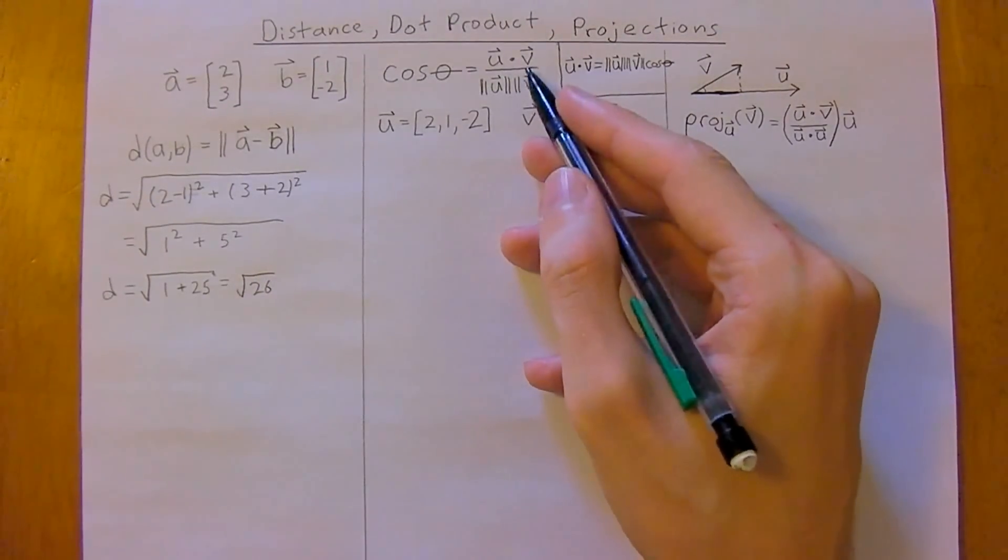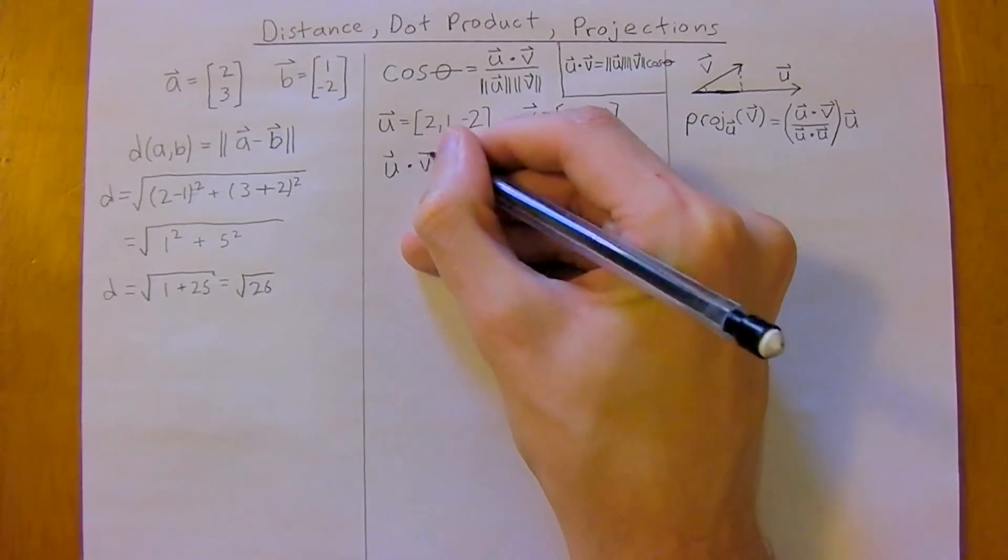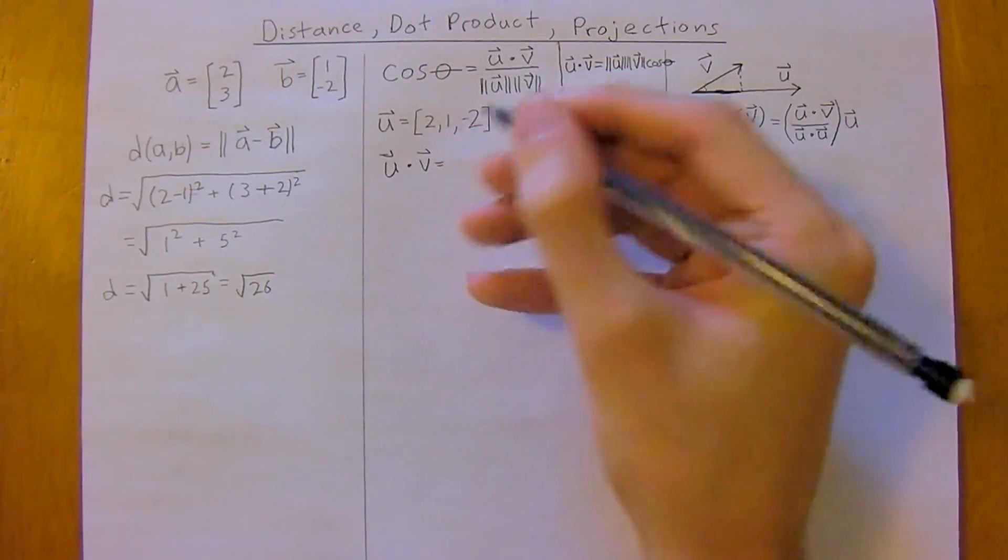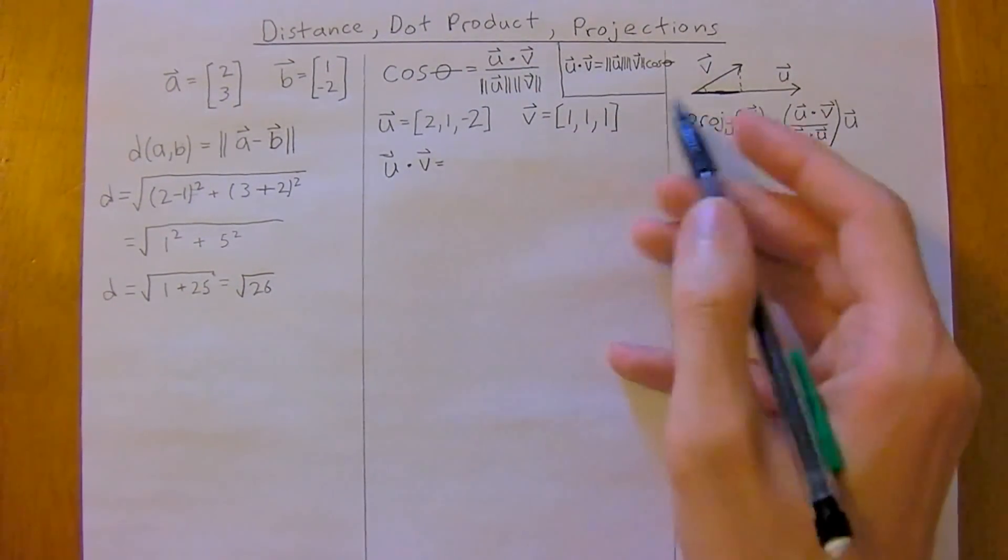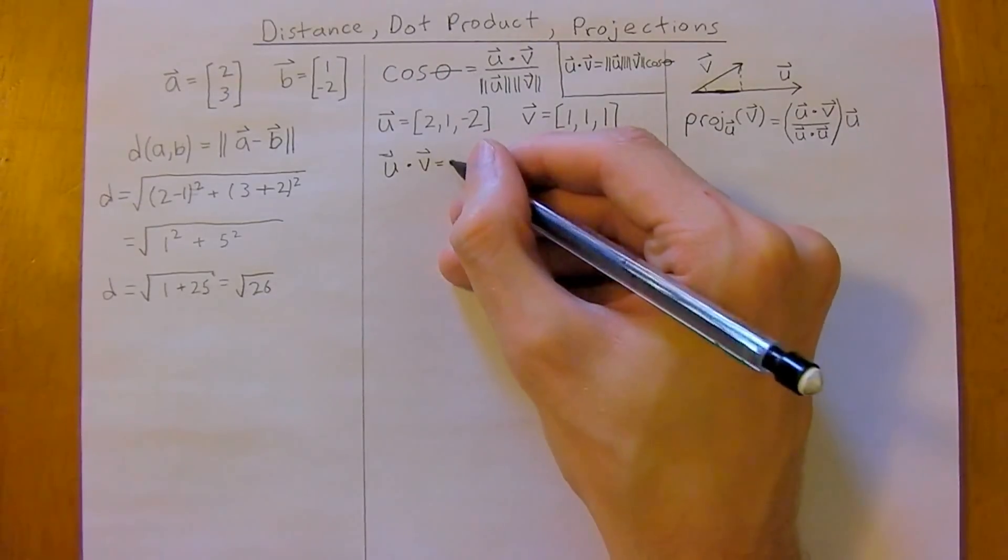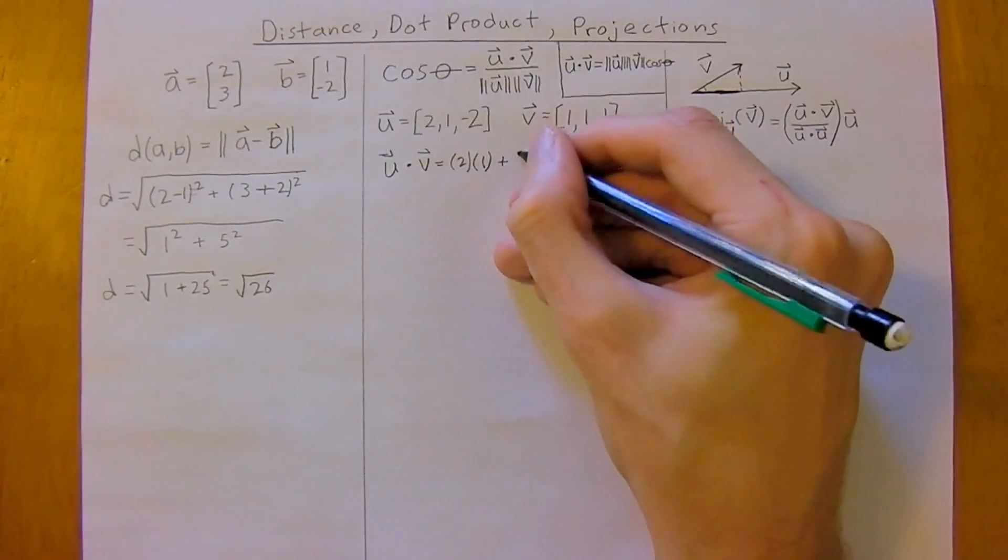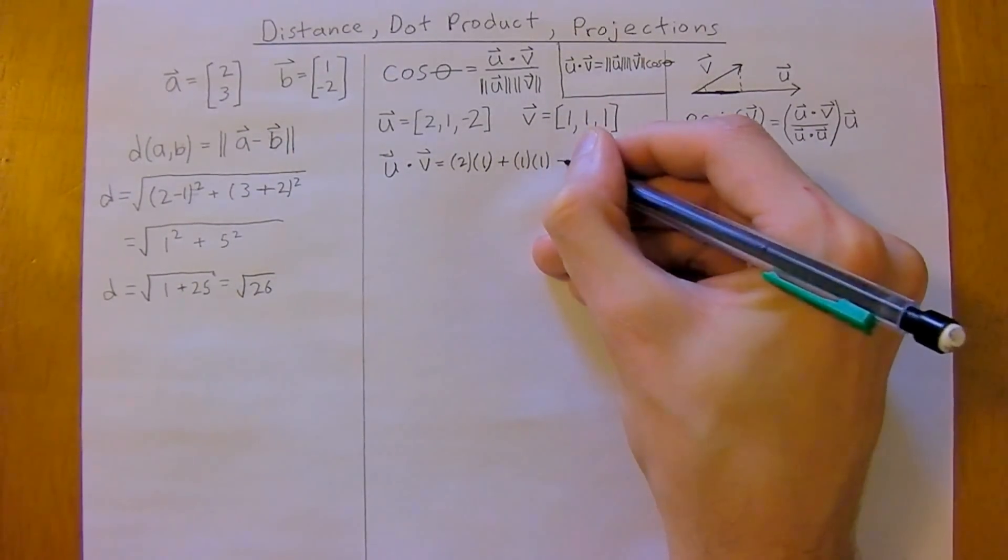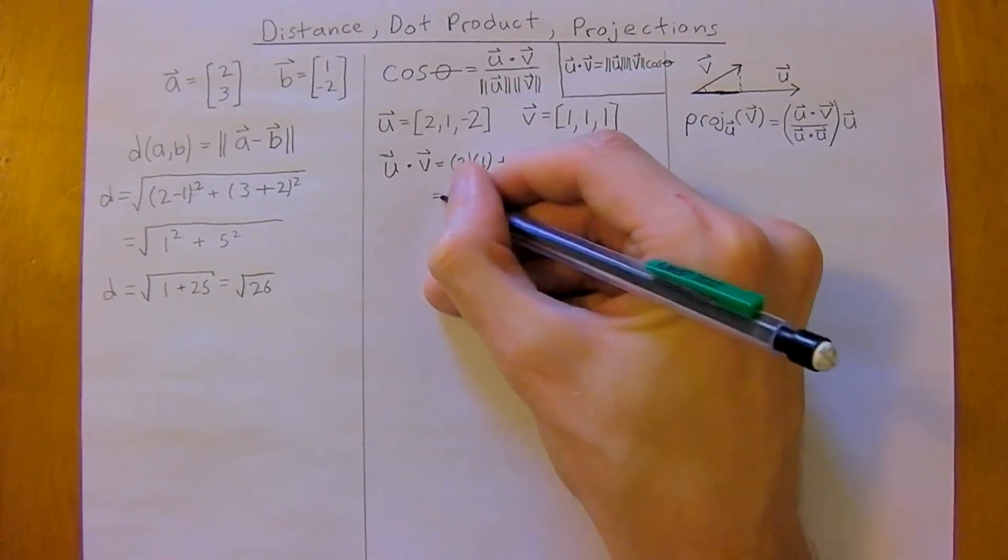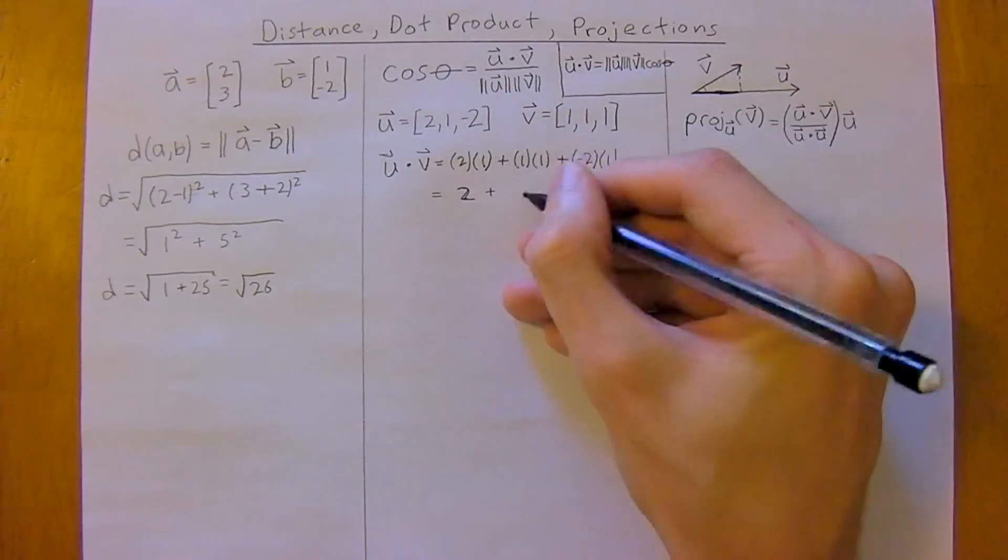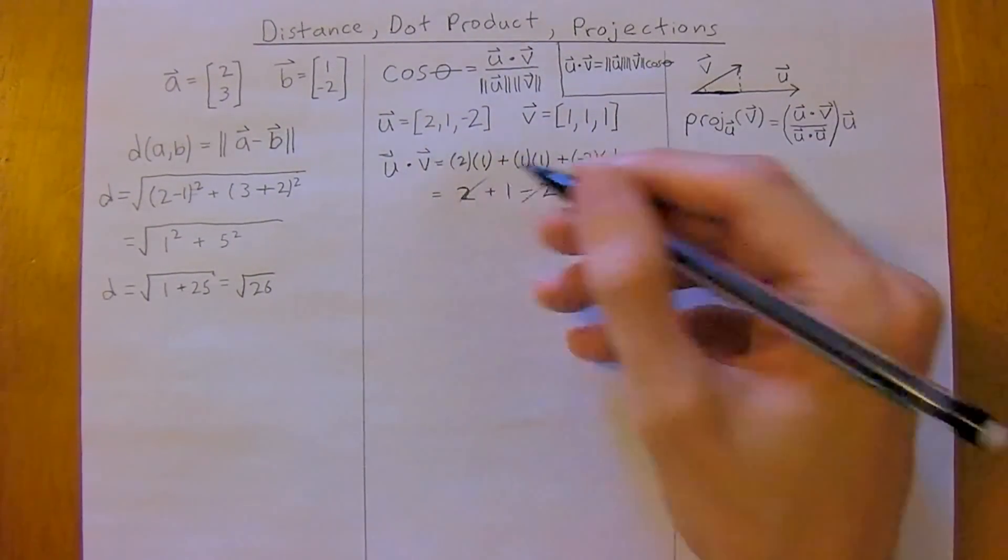So first we're going to calculate U dot V, so U dot V equals, well, we just multiply the components, then add them up, so 2 times 1, so 2 times 1, plus 1 times 1, so 1 times 1, plus negative 2 times 1, so this equals 2 plus 1 minus 2, which, well, these will actually cancel, so we're just left with 1.